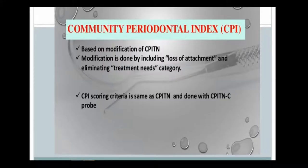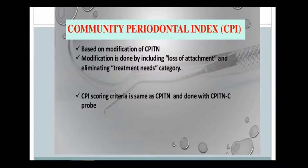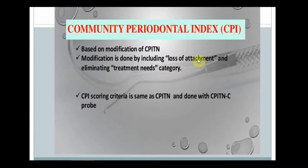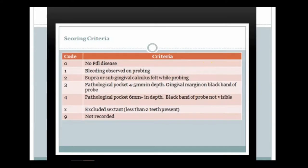The next index is CPI — Community Periodontal Index — which is a modification of CPITN introduced by WHO in 1994. The modification adds a loss of attachment segment and removes the treatment needs category. The true sign of periodontitis is loss of attachment, which both Russell's Index and CPITN failed to include. CPI measures loss of attachment, making it a more accurate indicator of periodontitis.